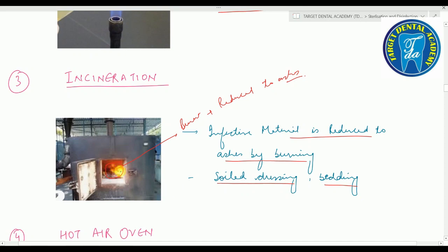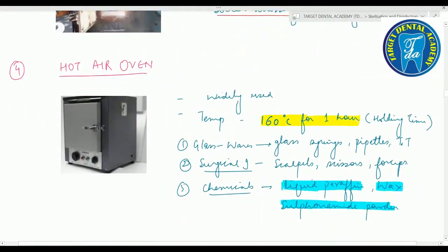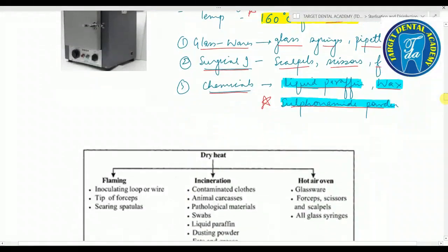Last method is the hot air oven — the most widely used method of dry heat sterilization. The important temperature is 160°C for one hour — this is the holding time. You can sterilize glassware products like glass syringes, pipettes, and test tubes; surgical instruments like scalpels, scissors, and forceps; and chemical products like liquid paraffin, wax, and sulfonamide powder. The key temperature to remember: 160°C for one hour.